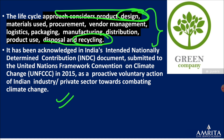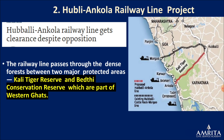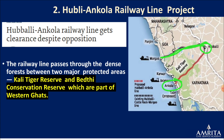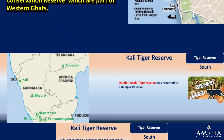Next is the Hubli-Ankola Railway Line Project. Hubli-Ankola is in Karnataka. This railway line was proposed and, as it passes through some green patches, there is contention about it. The government has given clearance to this railway line. It will pass through the Kali Tiger Reserve and the Bedthi Conservation Reserve, located in the Uttara Kannada district, part of the Western Ghats.